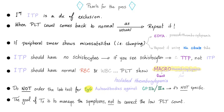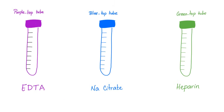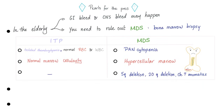Do not order the lab test for IgG antibodies against GP2B3A — it is very non-specific. The goal of treatment is to manage the patient, not just a number on a spreadsheet. If the patient is elderly with ITP, you have two concerns: GI bleed and CNS bleed. You also need to rule out myelodysplastic syndrome (MDS) with a bone marrow biopsy.